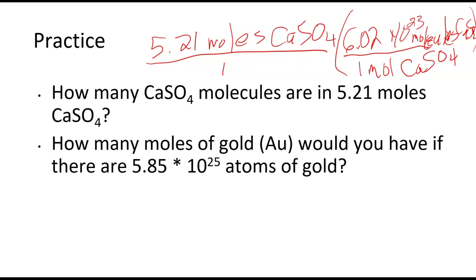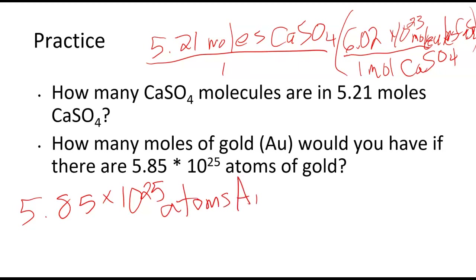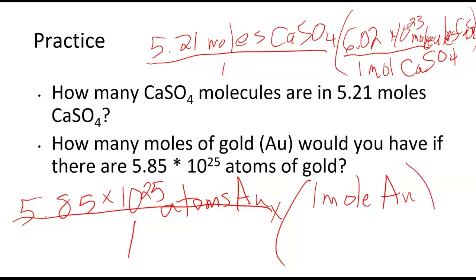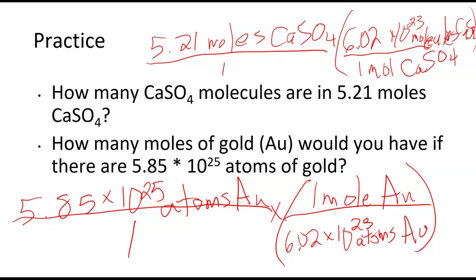For the second practice problem: how many moles of gold would you have if there are 5.85 times 10 to the 25th atoms of gold? Place that over 1, just like with all other conversions. For every 1 mole of gold, there are 6.02 times 10 to the 23rd atoms of gold. The main thing with these is to make sure you're canceling out your units, just like you do with any other conversion.